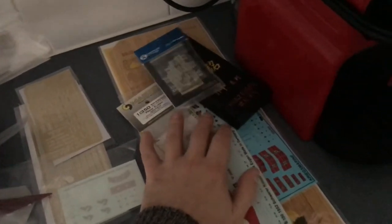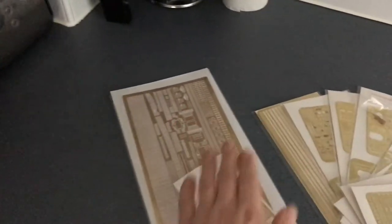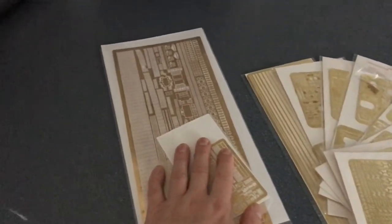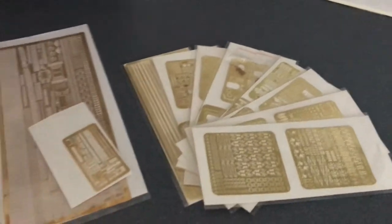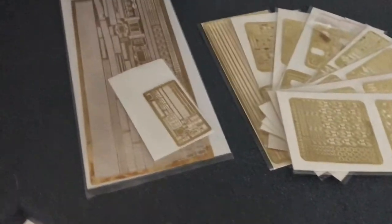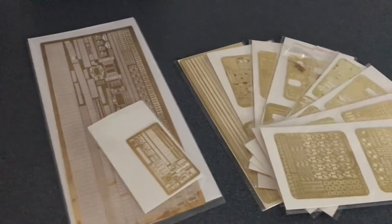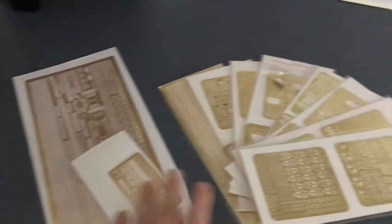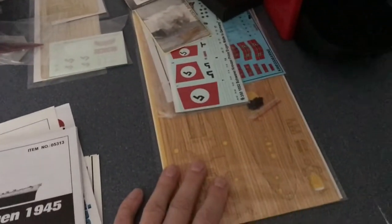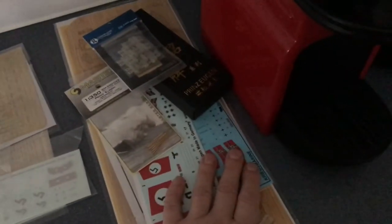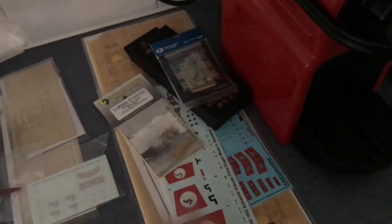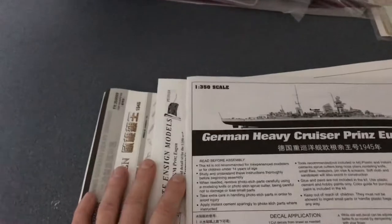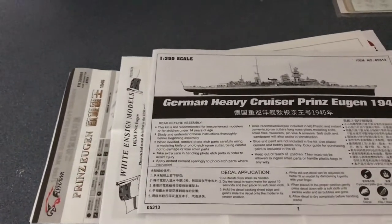And all the parts that come with it will come with some basic decals and increasingly these days some photo etch. Then we load it with some aftermarket etch and maybe even some more aftermarket etch. In this case I've got two different sets of etch—I've got White Ensign and I've got Flyhawk—and I've got a deck overlay.